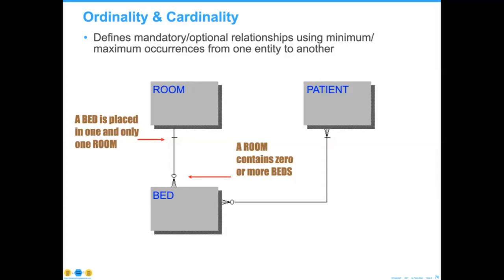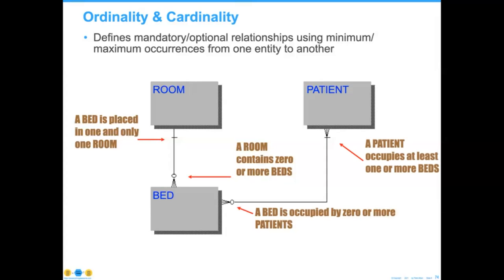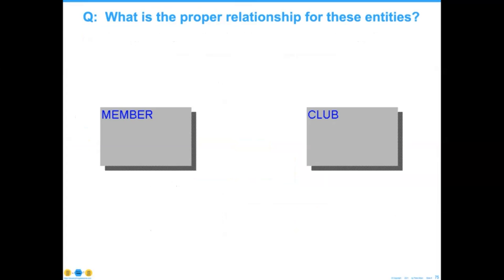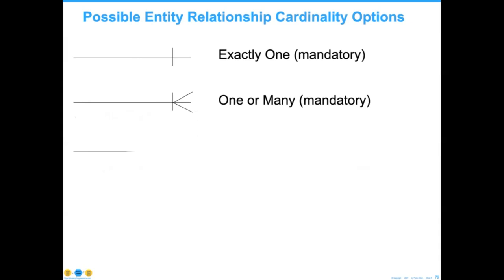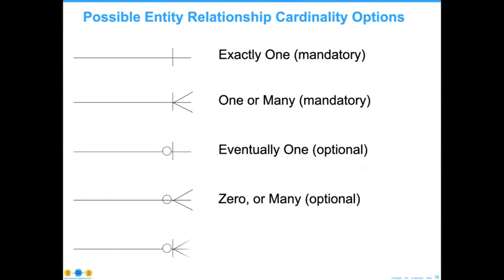A bed is occupied by zero or more patients, and a patient occupies at least one bed. So given that, what would be the proper relationships between members and clubs? You can't really answer that without more context, but it could be exactly one, one or many, eventually one, zero or one or many, and eventually one or many. These five breakdowns are critically important to understanding the basics of data modeling, and what decisions you make are going to be important.